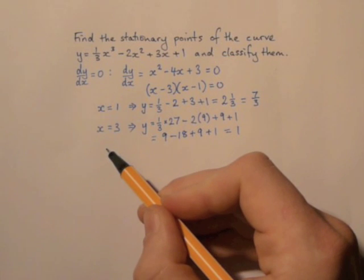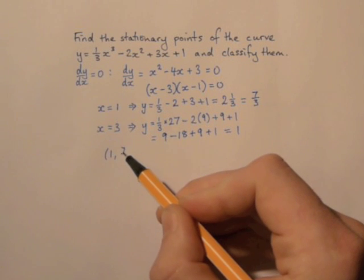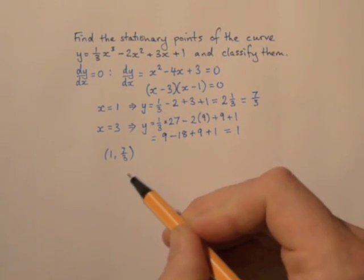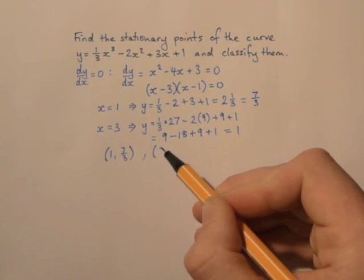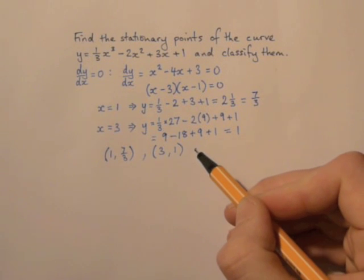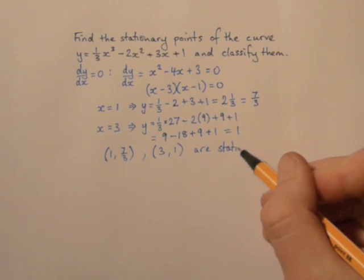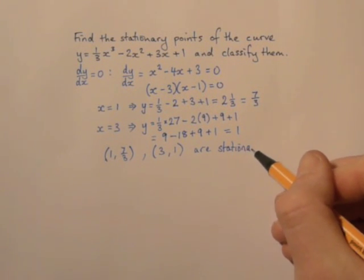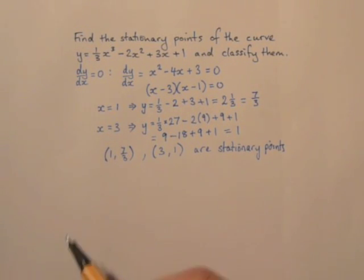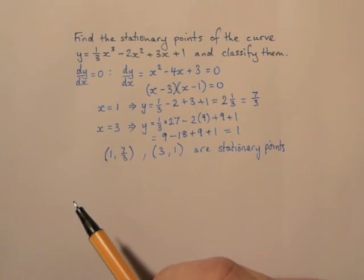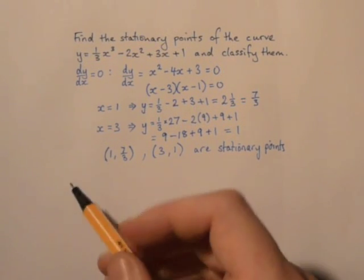So the coordinates are one, seven over three, and three, one. So those are the stationary points. So we found them, but then it says classify them. And we classify them by looking at the second derivative.